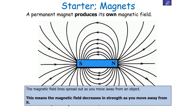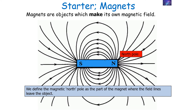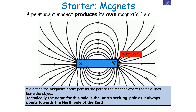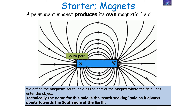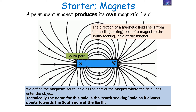The magnetic field decreases in strength as you move away from the magnet. We define the magnetic north pole as the part of the magnet where the field lines leave the object — technically called the north-seeking pole, as it always points towards the north pole of the earth. We define the magnetic south pole as the part of the magnet where the field lines enter the object — technically called the south-seeking pole, as it always points towards the south pole of the earth.